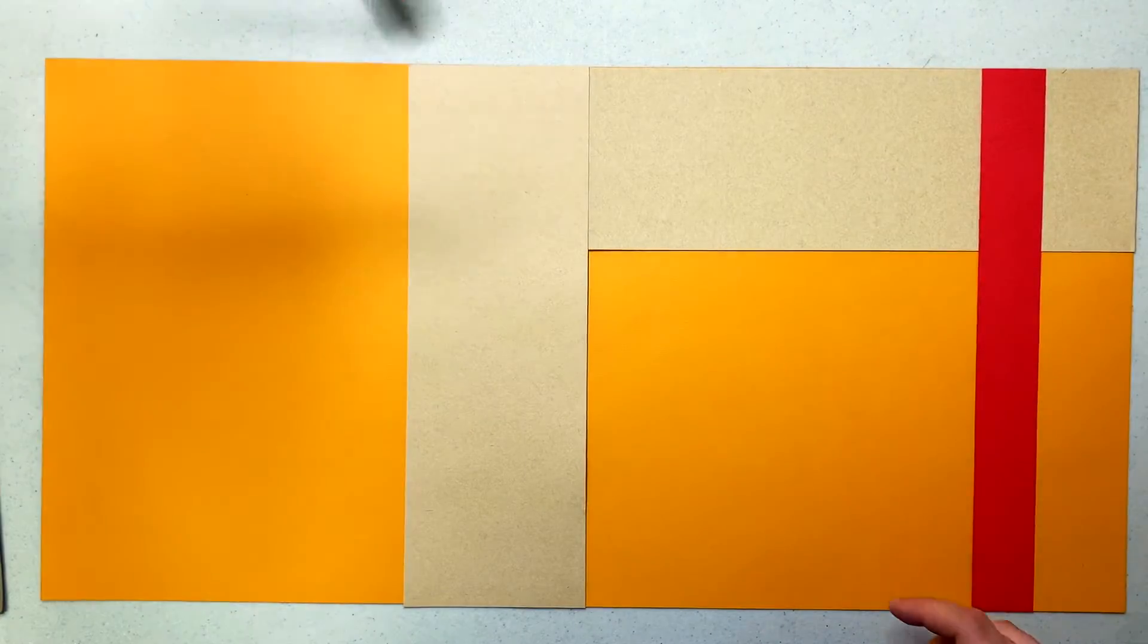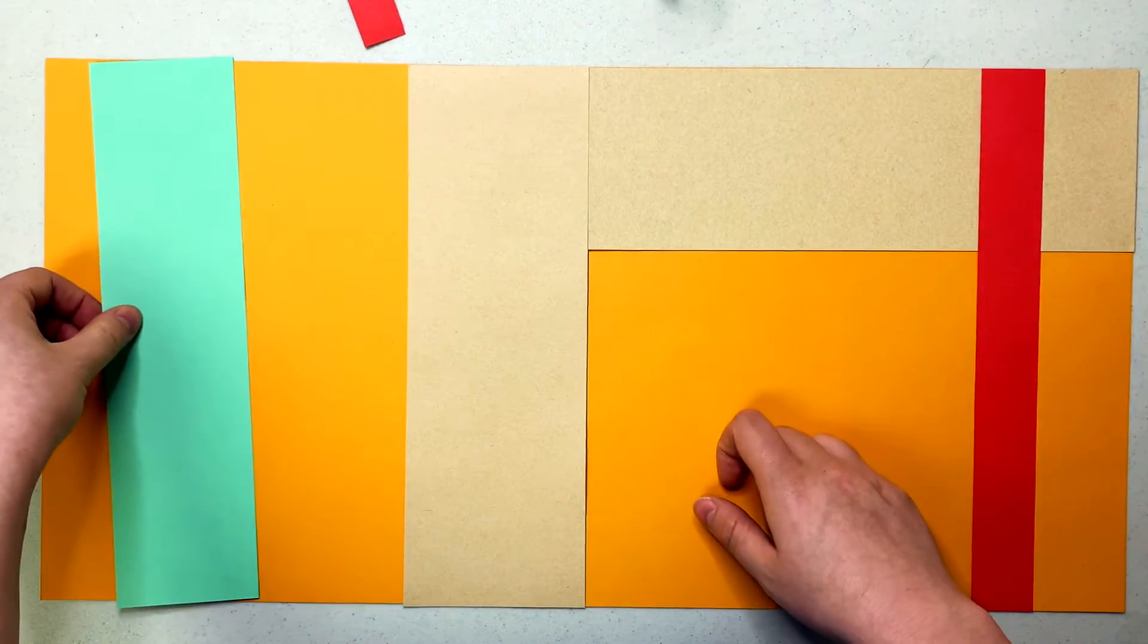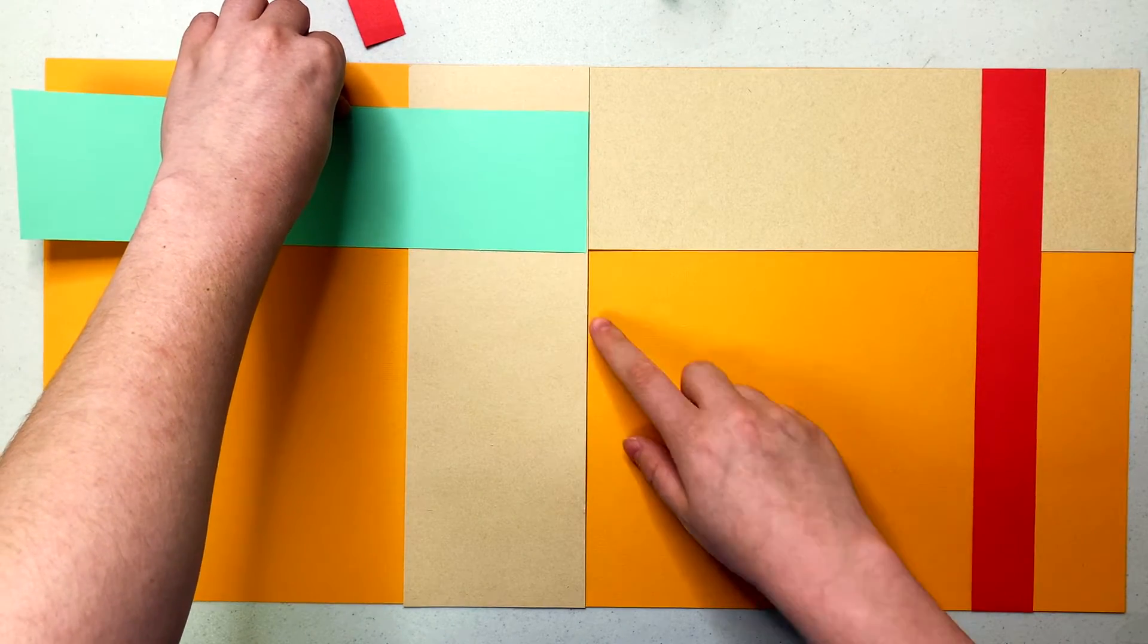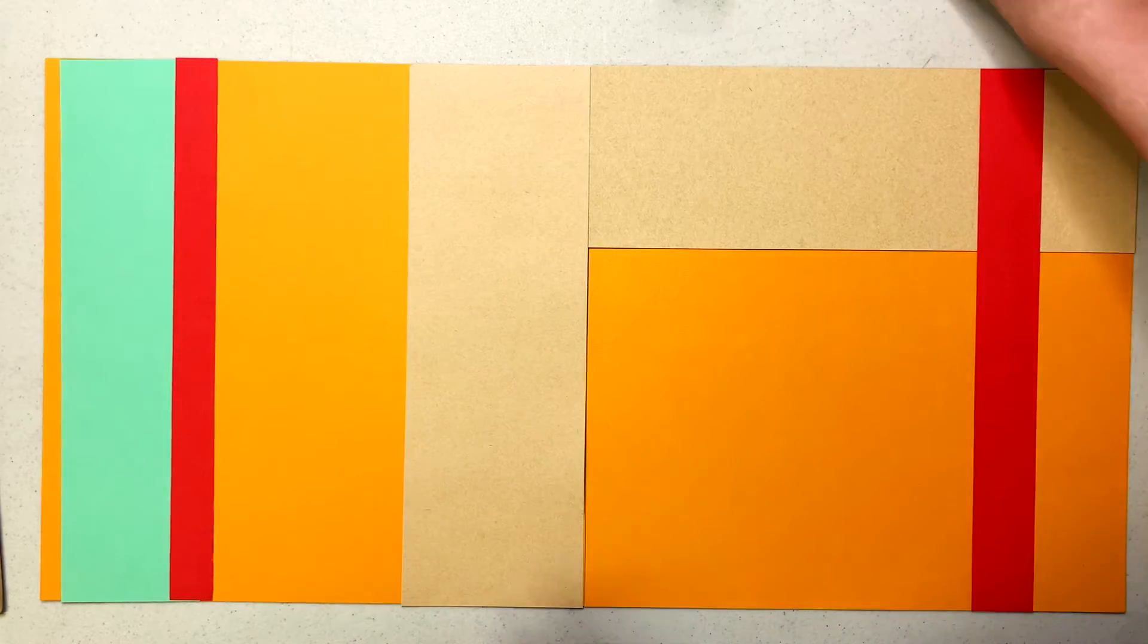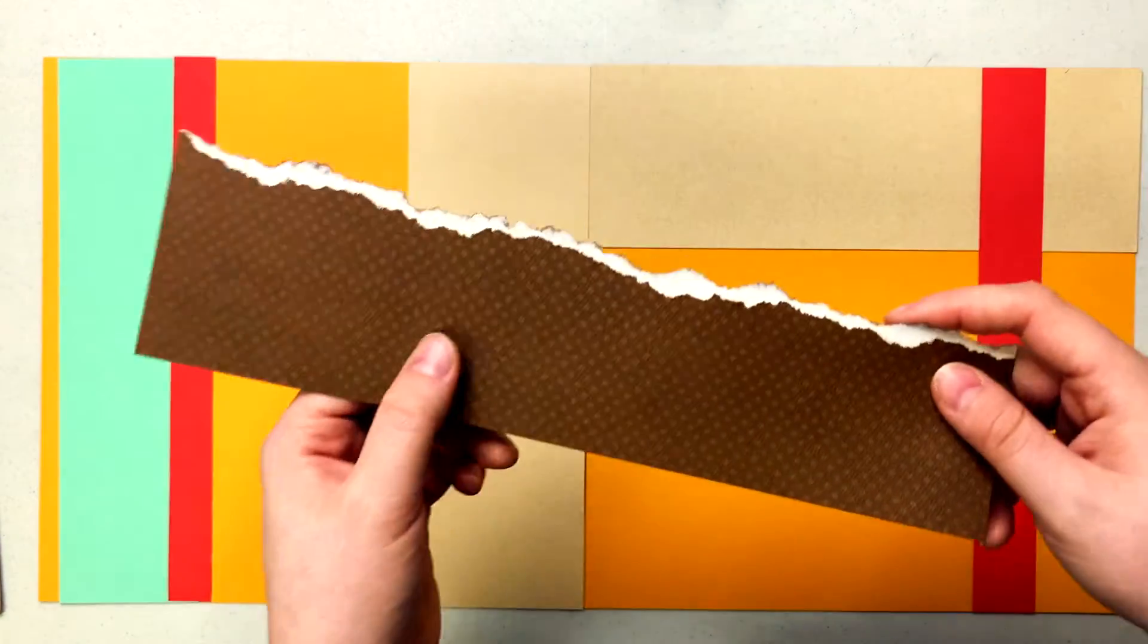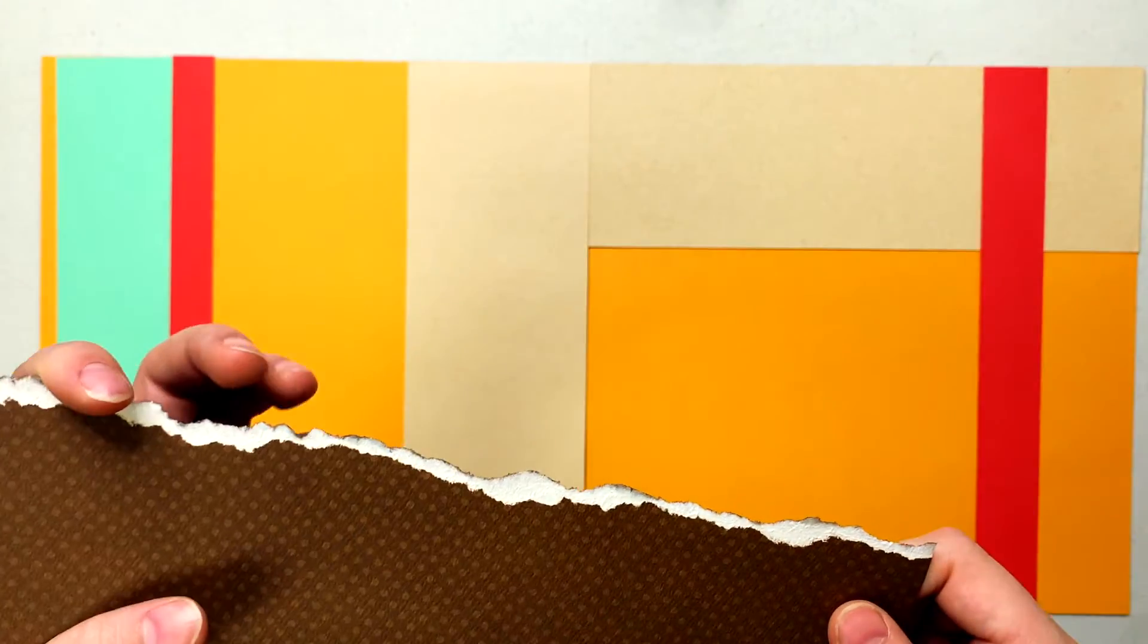I also pulled in this really pretty teal color. I think this will be really gorgeous to work with as well. Lastly I did pull in this pattern paper. It is like a brown polka dot and then you can see I did some ripping.